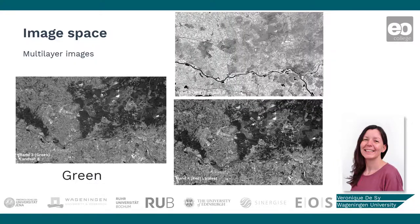And now I have added the near-infrared reflectance, where you can see that the intensity values, or reflectances, are very different from the other two bands I have shown. Near-infrared reflectance tends to be high for vegetation.